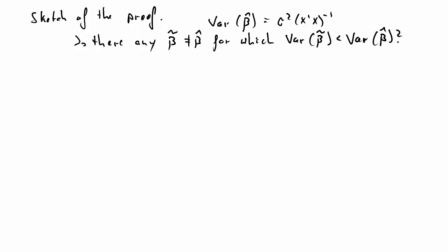but for which we find the variance of that beta tilde to be smaller than the variance of beta hat? So, that's what we want to establish. And we will show that there isn't any such. Now, smaller here is in a matrix sense,